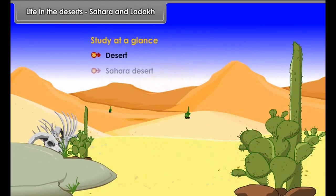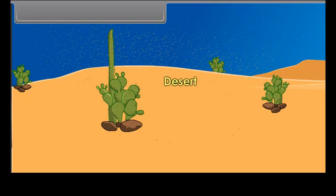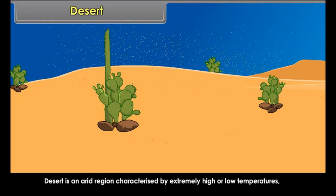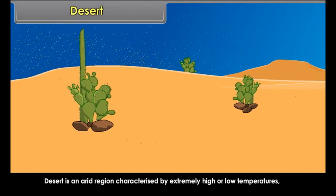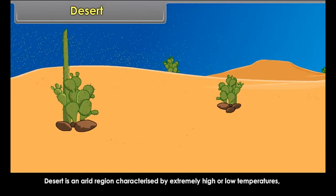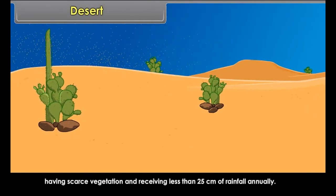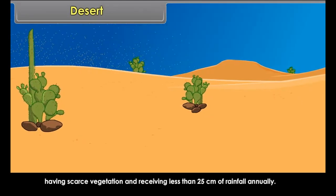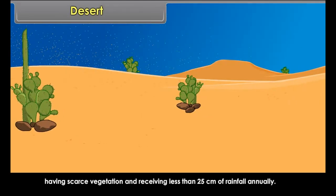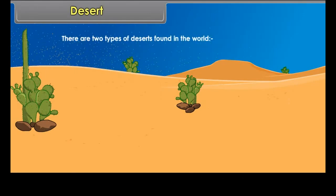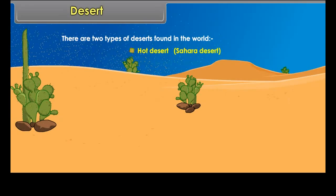Desert is an arid region characterized by extremely high or low temperatures, scarce vegetation, and receiving less than 25 cm of rainfall annually. There are two types of deserts found in the world: Hot Desert — Sahara Desert, and Cold Desert — Ladakh.